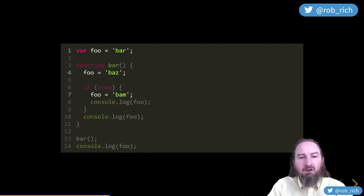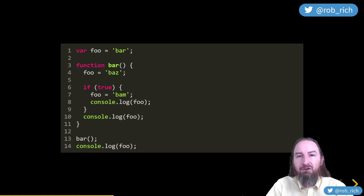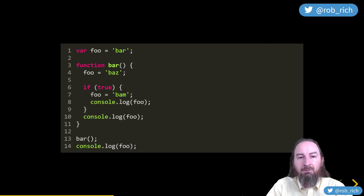Now let's not declare the inner variable at all. First phase: only one variable to declare — the outer foo. Second phase: set outer foo to bar, call the function. Looking for a foo variable in the current scope — there isn't one, so we walk up scopes. JavaScript is trying to help us. We find the outer foo and set it to baz, then to bam. Console.log bam, bam. Leave the function, console.log the outer foo — it's bam. Result: bam, bam, bam.